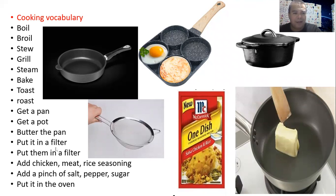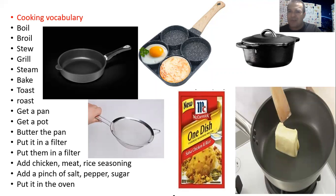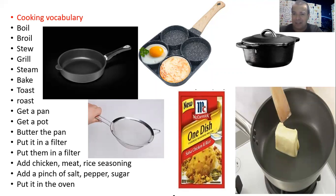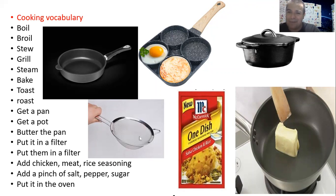Next one: put it in the filter. This is a filter — a filter is basically where you put something in it and it just goes through. Also, the other name for filters is strainers. They are called strainers because the little holes are tiny, and there are some filters where the holes are a little bit bigger. So it all depends on the type of filter you're using for cooking. Remember, the other name for a filter is strainer.